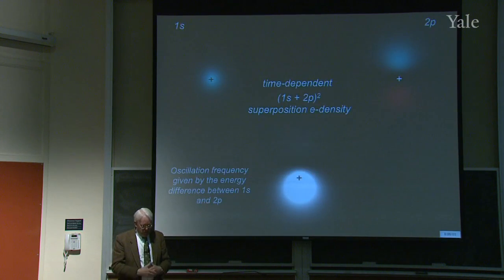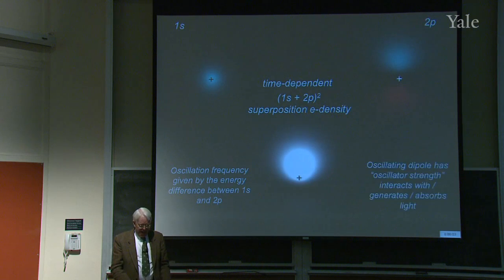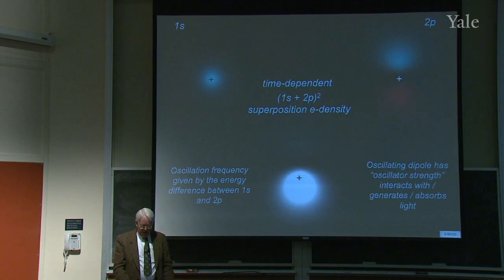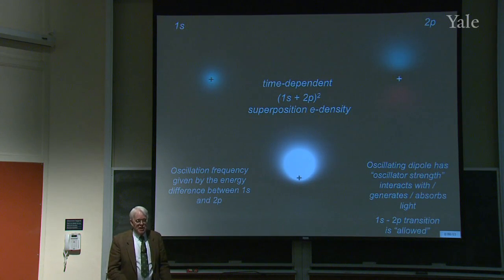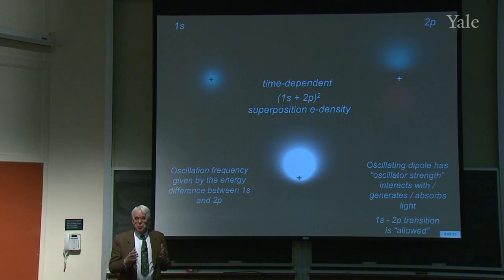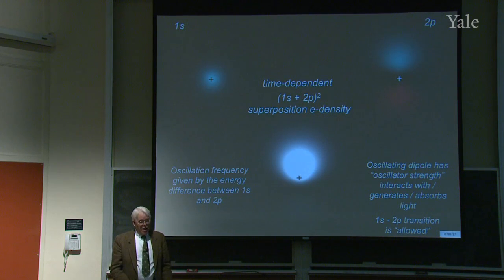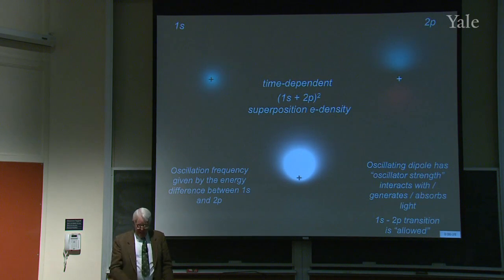We get this oscillation up and down which interacts with light — it can generate light or absorb light. The 1s to 2p transition is said to be allowed because it happens with light. But there are other mixtures that don't generate light.